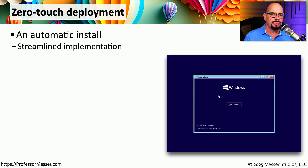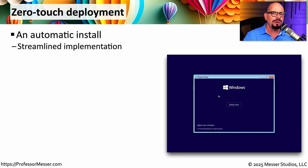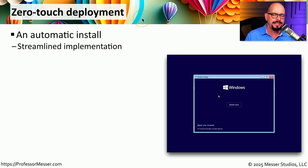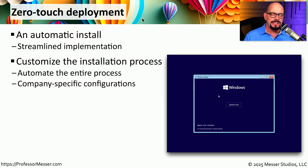One of the challenges we're often faced with in an organization is that we may have users all over the world. They have many different systems that they might be using, and we need to have some way that they can perform the operating system installation but still have all of the configuration settings necessary to use it on the corporate network. Generally, we would perform a zero-touch deployment to make this happen. This is an automated installation process that walks the user through the installation with little or no prompts they would have to answer.